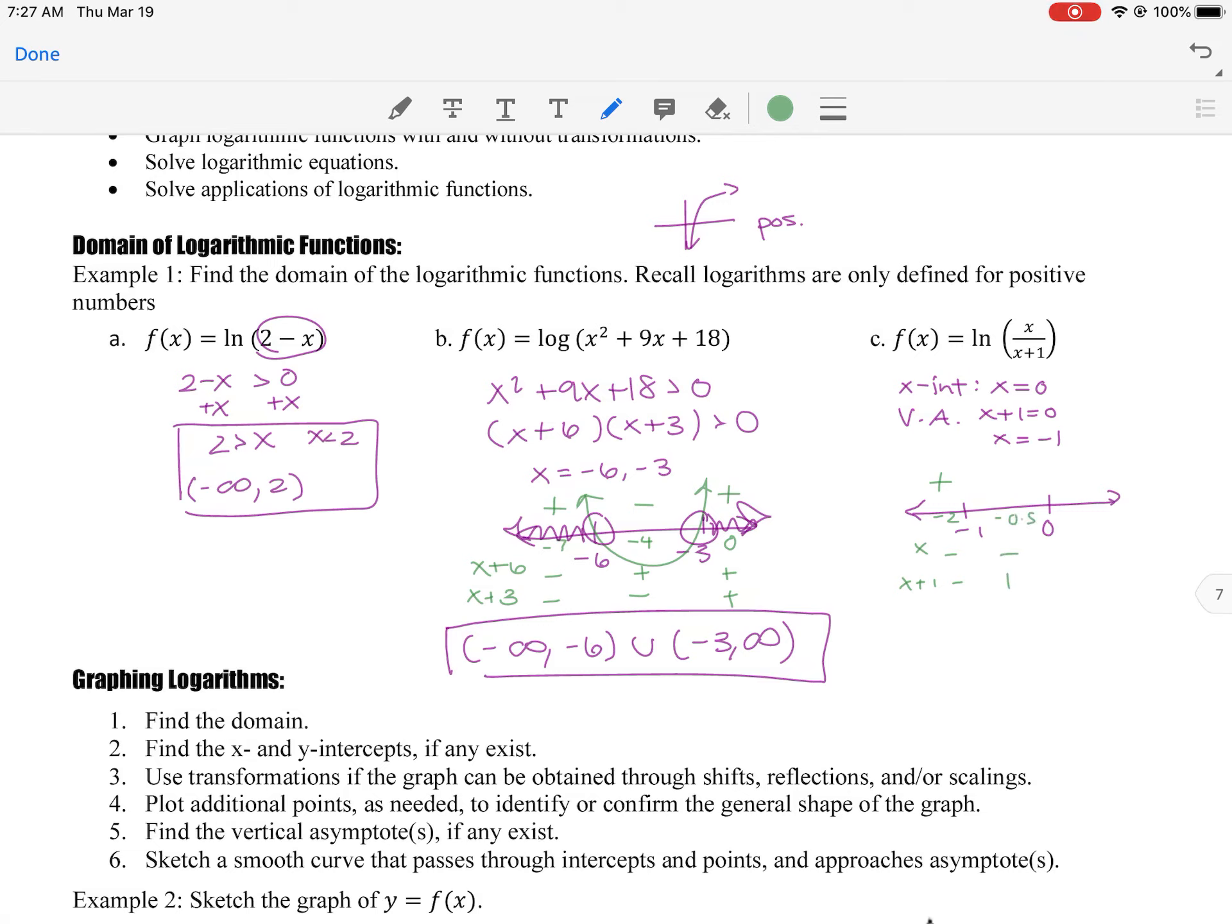And then same thing, I would put the two factors of x and then x plus 1. Plug in something like negative 2, we get a negative and negative, so it's a positive. Plug in something like negative 1 half, we get a negative and a positive. Plug in something like 1, a positive, a positive. So once again, we want the two outsides because we want where the interval is positive. So we're going to have from negative infinity to negative 1, union 0 to infinity.